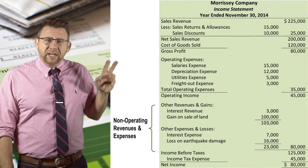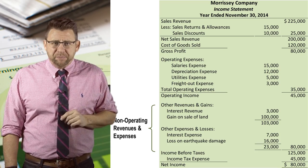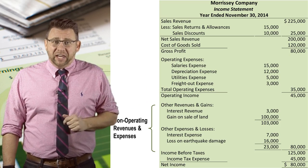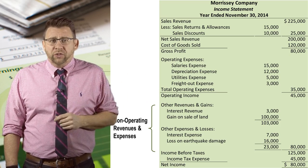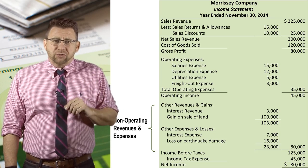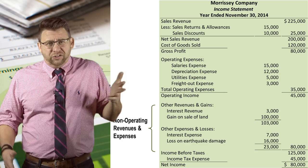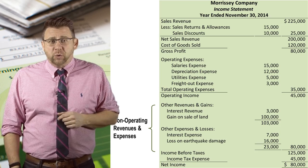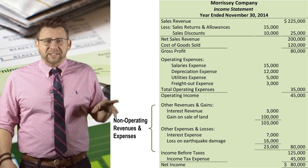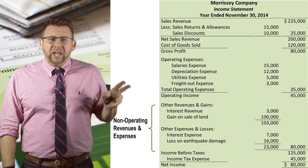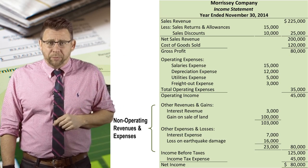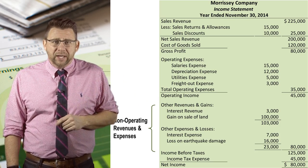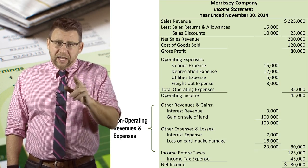The next section reports non-operating revenues and expenses. These items are either one-time amounts, like gain on sale of land or loss from earthquake damage, or items not part of central operations, like interest revenue earned by making a loan or interest expense incurred by financing assets with debt. This section is sometimes known as the other section. Other revenues and gains are added to operating income, and other expenses and losses are deducted, giving us a new subtotal called income before taxes.